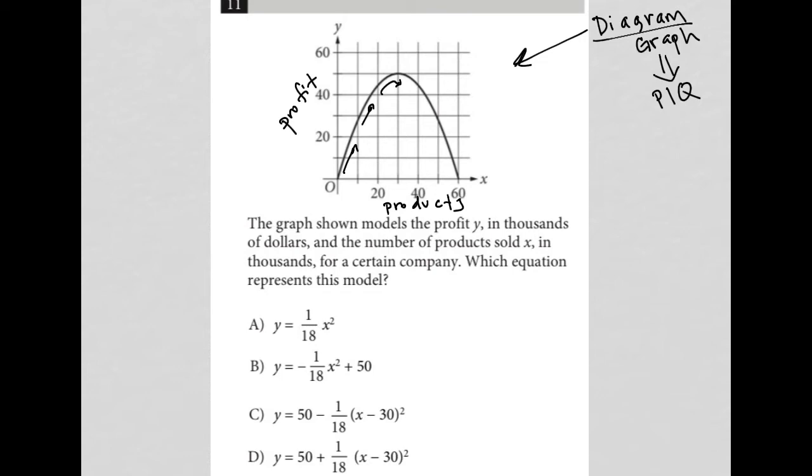And I do that by finding ordered pairs on the graph that are definite, right? I don't want approximations. I don't want to assume that I know what this point on the graph is. I pretty much know for sure that that point right there is zero comma zero. I know for sure this point right here is 60 comma zero. And I know for sure that this point right here is, let's see, 30, and so yeah, 30 comma 50. So I am able now because of that to plug these things in.